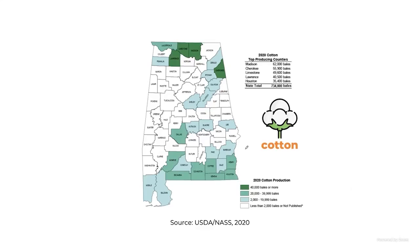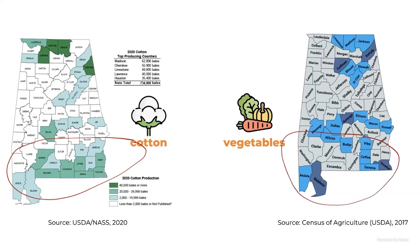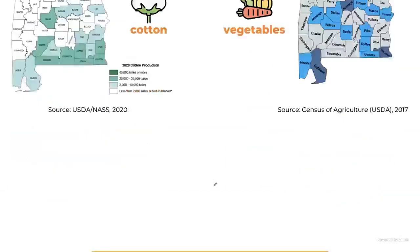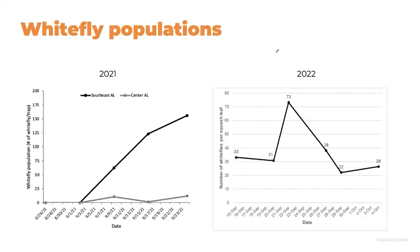Row crop cotton is also a whitefly host. When cotton is defoliated, the whiteflies migrate. Most of Alabama's cotton is in the southern part of the state, so as cotton is defoliated, the whitefly population moves into that same area. By the end of summer when cotton defoliation begins, we see our peak whitefly populations, and that's when the overlap with our vegetable crops creates the biggest problem.